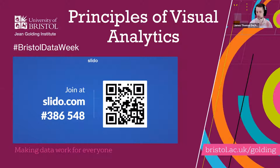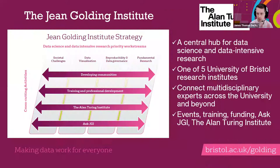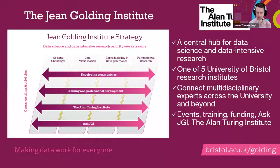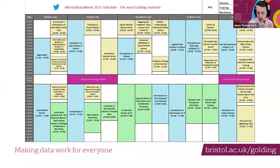My name is James Thomas, I'm a data scientist at the JGI — the Jean Golding Institute — which is the central hub for data science and data-intensive research at the University of Bristol. We're one of five university research institutes, and our aim is to connect multi-disciplinary experts across the university and beyond. We work with four priority work streams: societal challenges, data visualization, reproducibility and data governance, and fundamental research.